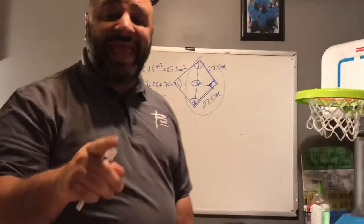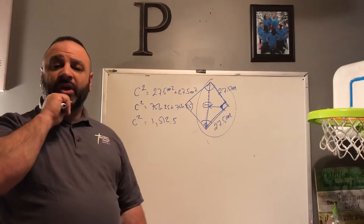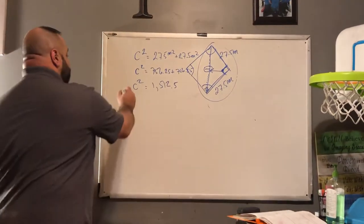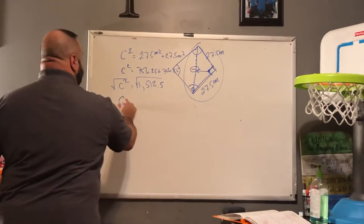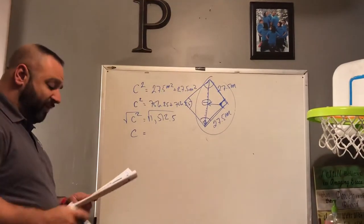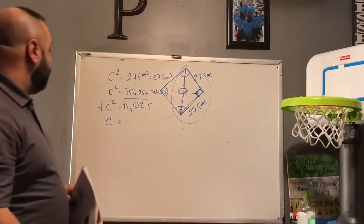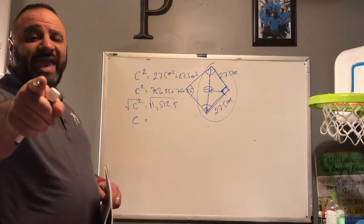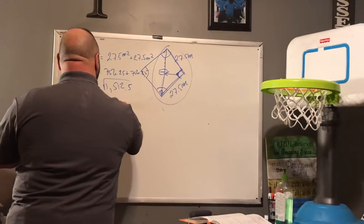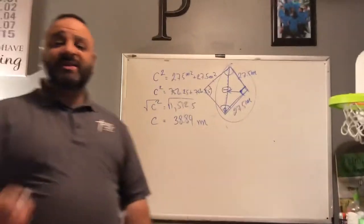To eliminate the exponent, how about Josh Baruch? We have to find the square root of both sides. So C equals the square root of 1512.5. How about Gabe give us the answer, followed up by Hannah? The answer is 38.89 meters — that's how far the catcher will have to throw. Great job.